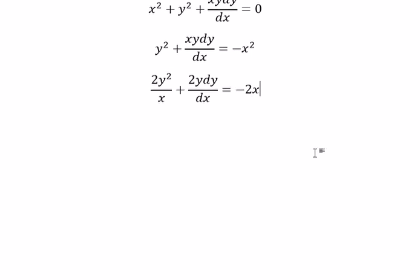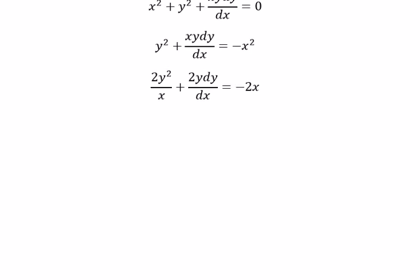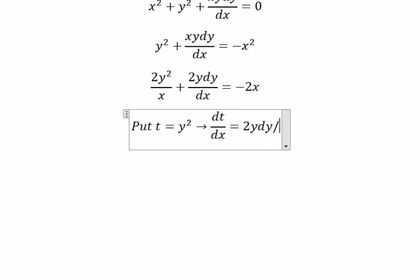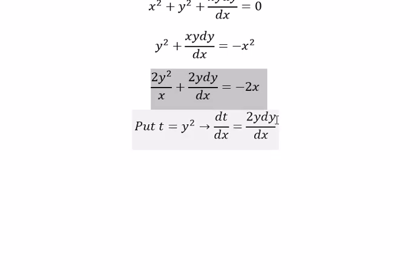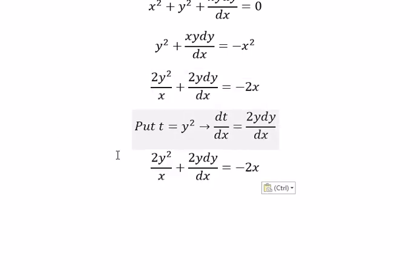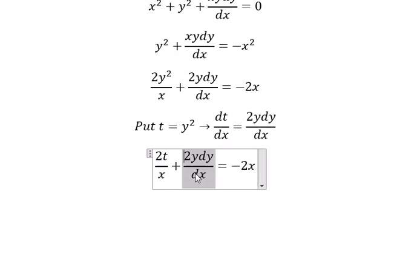Next, we put t equal to y², so dt/dx equals 2y dy/dx. We substitute t into the equation, and we get dt/dx here.